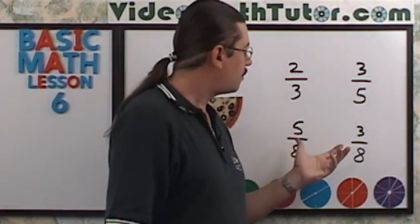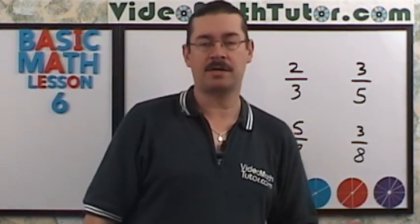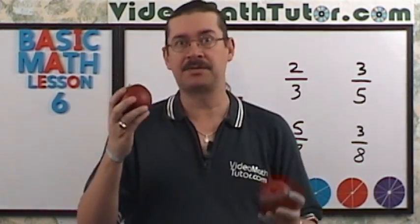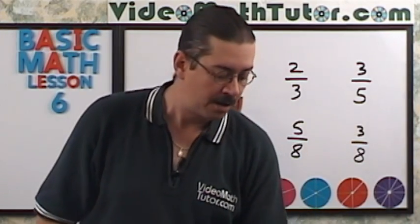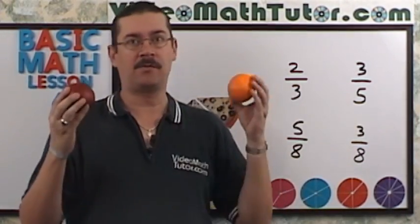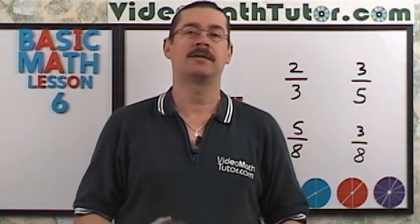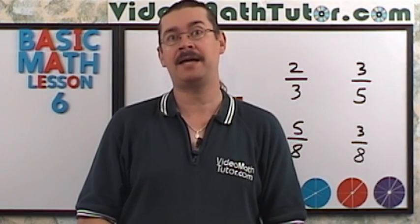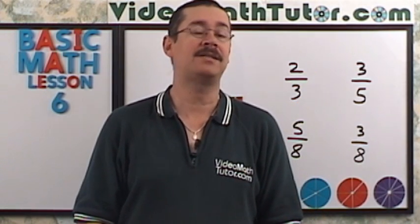Another way to think about it is that with the eighths, it was easy to compare — it's like comparing apples with apples. But with different denominators, you're trying to compare apples with oranges, and that just won't do. So now let's find a mathematical way of comparing the sizes of these fractions.